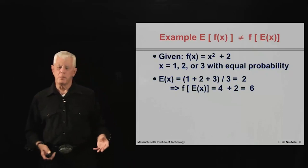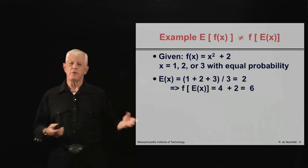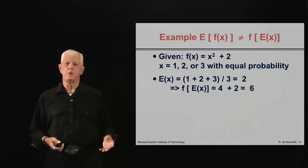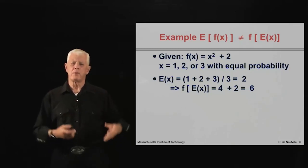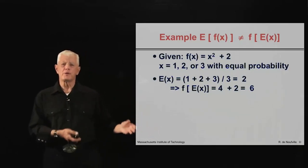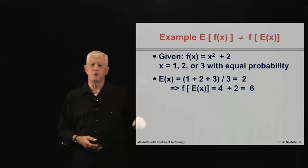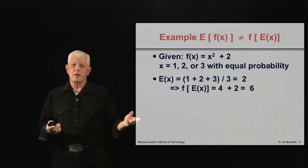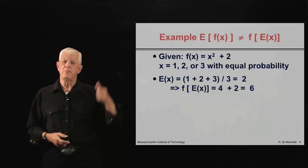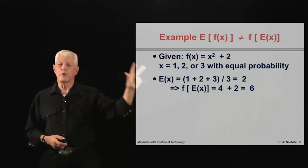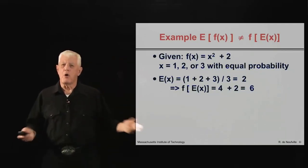So let me show you how this works. To give you a concrete, specific example, let's suppose we have a very simple measure of performance, which is that f(x) is equal to x squared plus 2, and that x can have, with equal probability, it can be 1, 2, or 3.